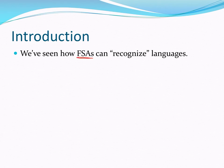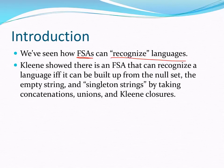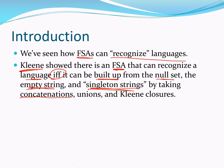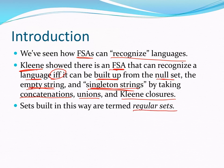We've seen how finite state automata can recognize languages — FSAs and DFSAs ending in final states for words that are part of the language. Kleene showed that there's an FSA that can recognize the language if and only if it is built up from the null set, the empty string, and singleton strings, then doing concatenations, unions, and Kleene closures — things you already know how to do.